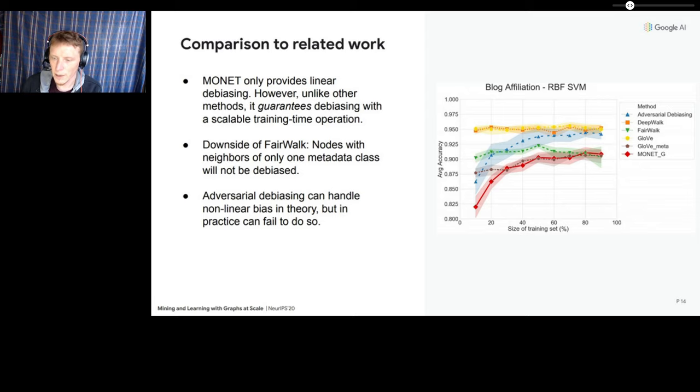Finally, I want to compare a bit more to the related work I mentioned earlier. One caveat to the MONET approach is that it only solves linear associations and linear sources of bias. However, unlike other approaches, it guarantees perfect debiasing of this sort and does so with a scalable training time correction. One thing I want to point out also is the reason we saw FairWalk perform poorly is that the method cannot debias nodes which have all their neighbors from one class of metadata. There's just no way to correct for that in the random walks. As for adversarial debiasing, that approach can handle more complex types of associations in theory, but in practice the hyperparameters involved with adversarial training make this approach difficult to achieve consistent results in practice. We see that even when a non-linear classifier is trained on debiased embeddings to predict political blog affiliation, MONET embeddings are still the most debiased and adversarial training actually does somewhat poorly compared with the rest.